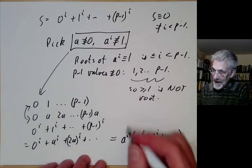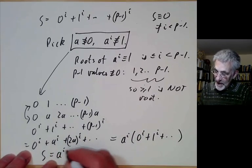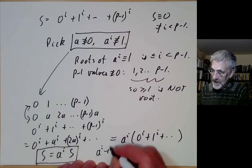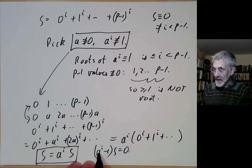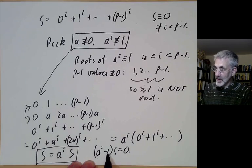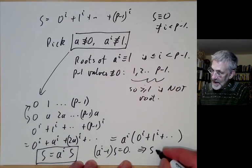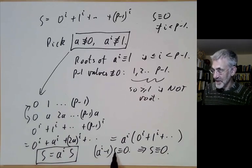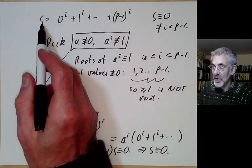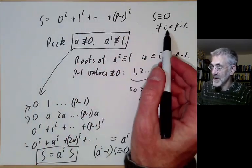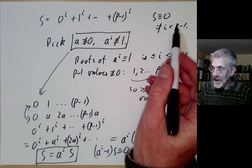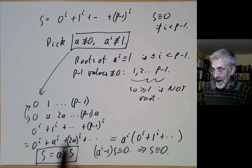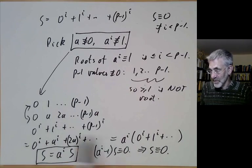And now this just says that (a^i - 1) times s = 0. And because a^i is not congruent to 1 mod p, this implies that s is congruent to 0 because modulo p there are no zero divisors. So this is what we wanted to prove. This sum vanishes mod p as long as i is less than p-1. If i equals p-1, this proof breaks down because we can't find an element a with these properties and so we can't do this argument.